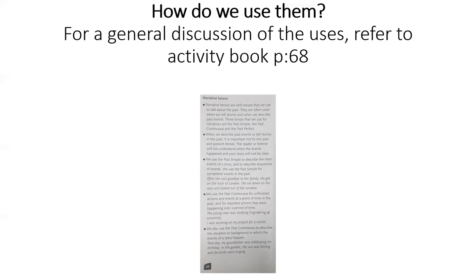We said it is very confusing to mix up tenses, especially past and present. Our book concentrates on how to use these tenses in stories. The first bullet point: we use the past simple to describe the main events of the story and to describe sequences of events. We also use the past simple for completed events in the past. For example: 'After she said goodbye to her family, she got on the train to London, sat down on her seat, and looked out of the window.'